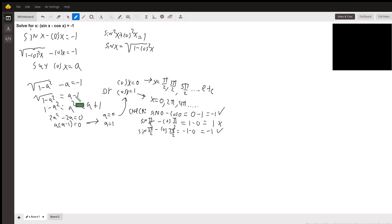Add a to both sides and then square both sides. We get one minus a squared equals a squared minus two a plus one. If you cancel the ones and add a squared to both sides and divide by two, or before dividing by two, get two a squared minus two a equals zero.